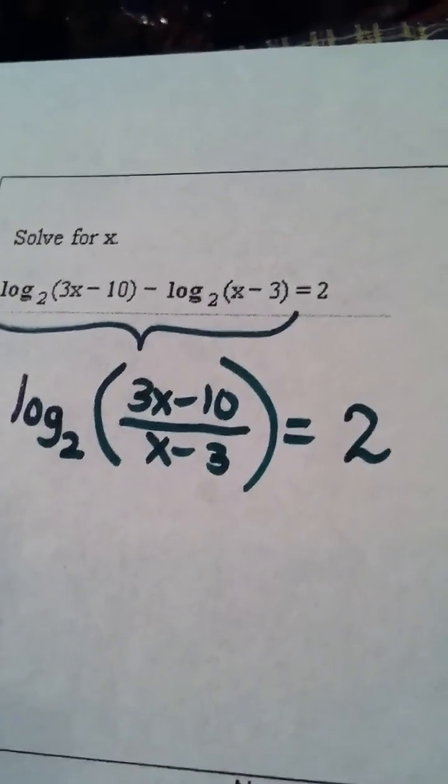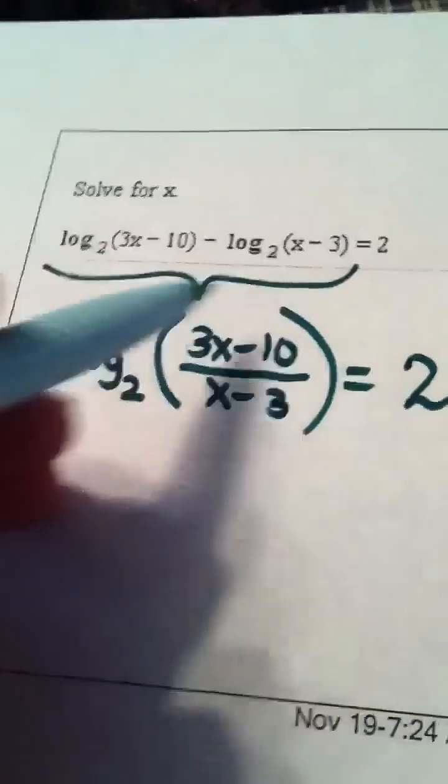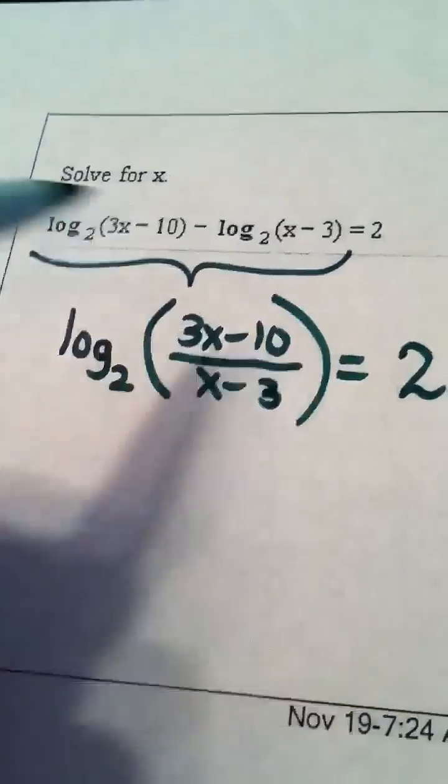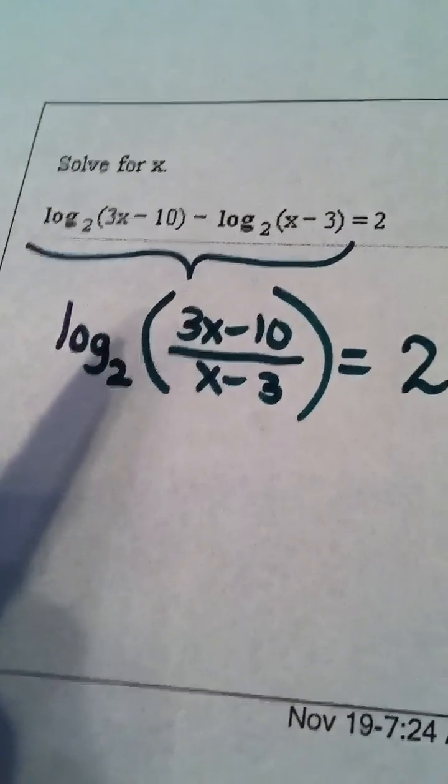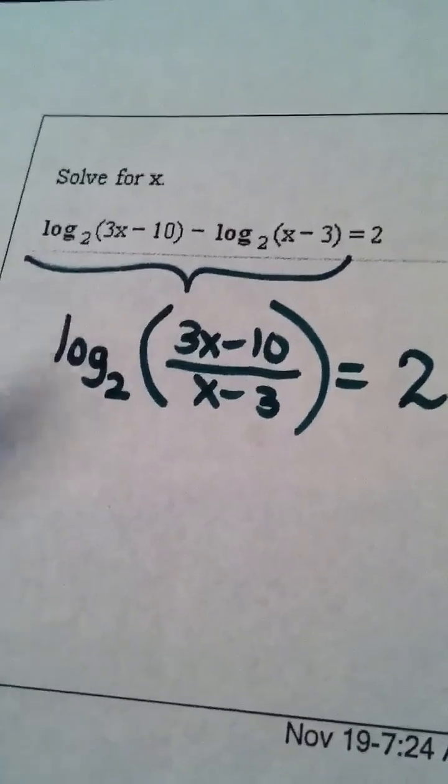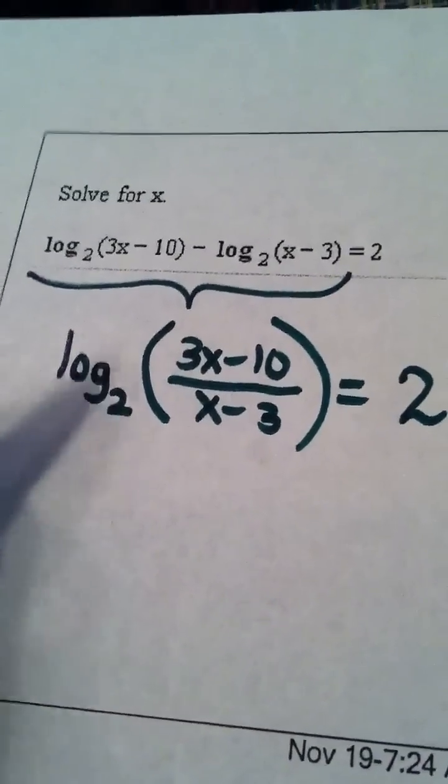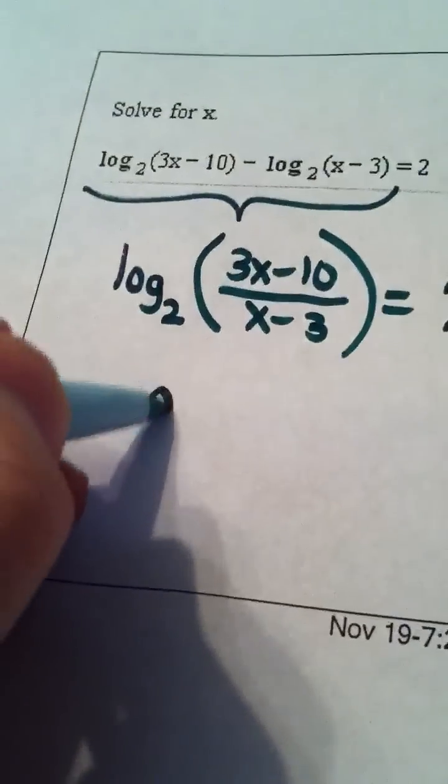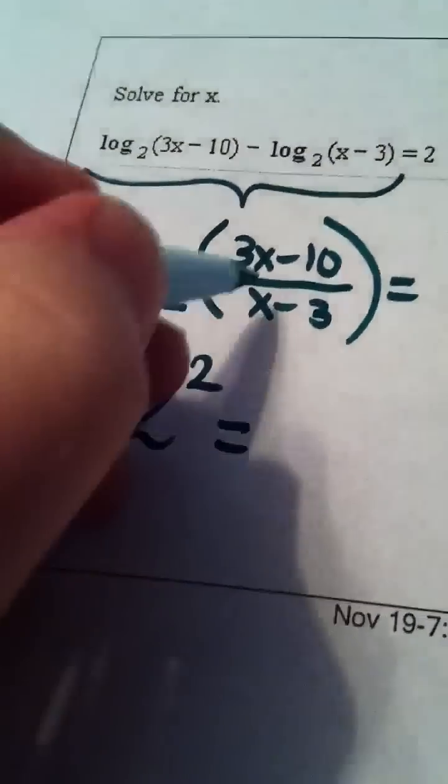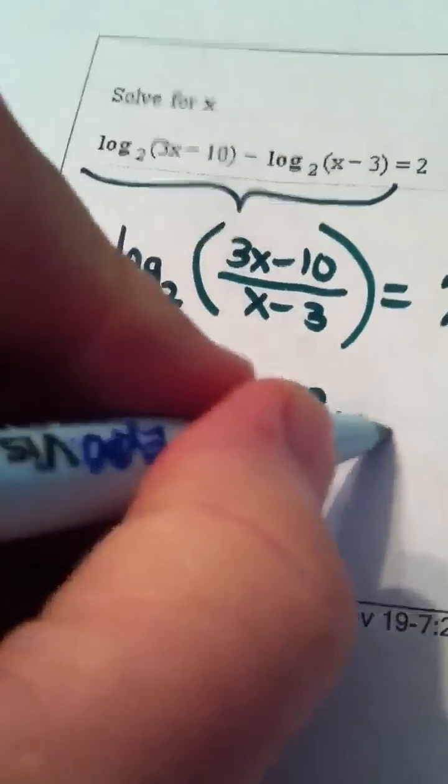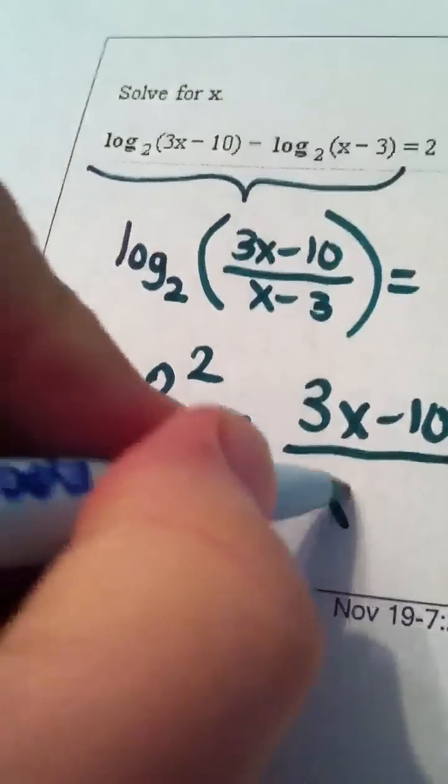I'm now going to convert it from log form into exponential form. 2 raised to the second power will equal 3x minus 10 divided by x minus 3.